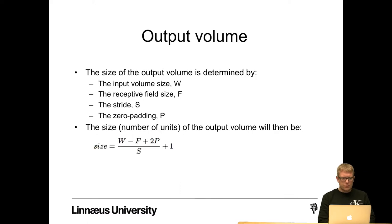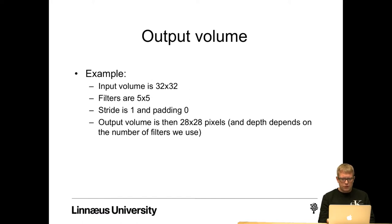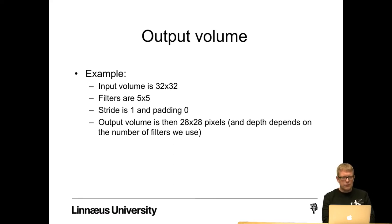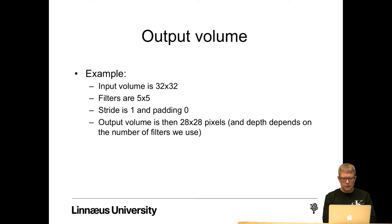The size of the output volume is determined by the input volume size W, the receptive field size F, the stride S, and the zero padding P. The number of units of the output volume will be (W minus F plus 2P) divided by S, plus 1. For example, if we have an input volume of 32x32 pixels, filters are 5x5, stride of 1 and padding of 0, the output volume is then 28x28 pixels. And depth depends on the number of filters we use.